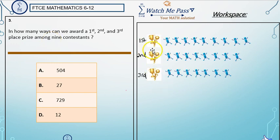We have three prizes: a first place, second place, and third place. And we are told that we have nine contestants.